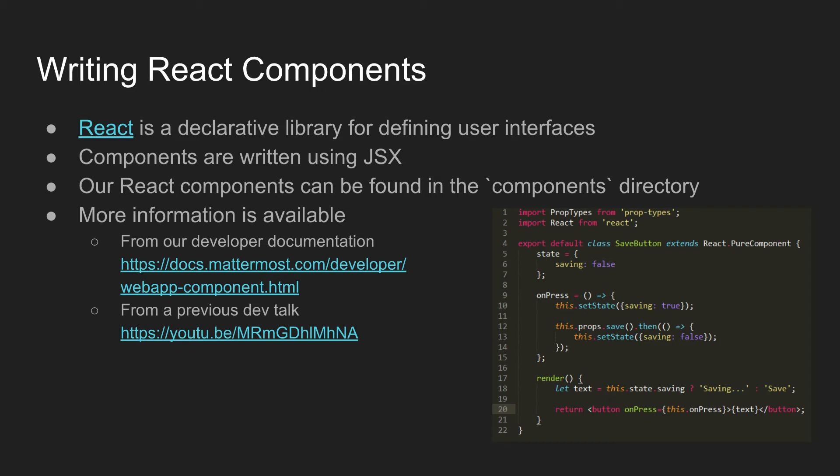There would normally be some prop types defining what gets passed into the component. The basic gist of how a React component works is that it renders based on state and props — you shouldn't be pulling in data from elsewhere. This gives a lot of nice behaviors in that it's very efficient and should only re-render when one of those changes. It does this using some fancy technology that keeps it efficient when translated into HTML.